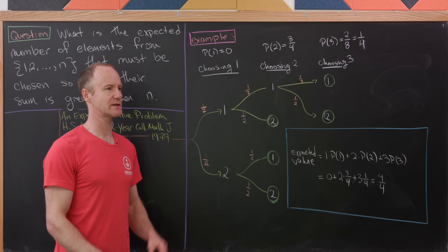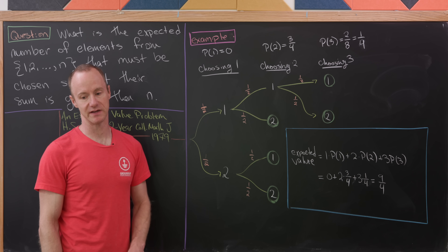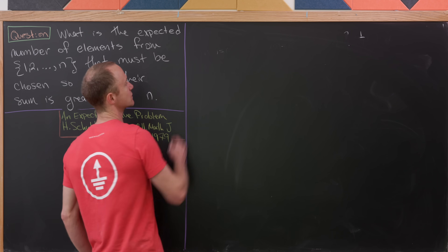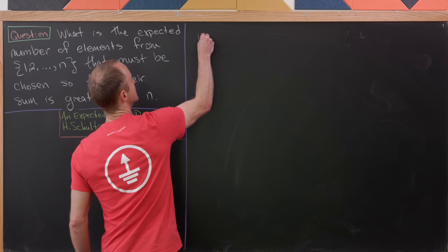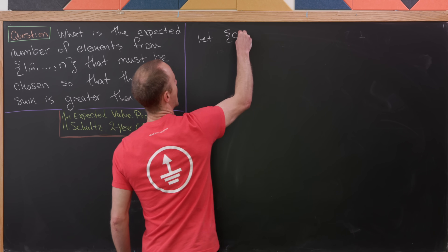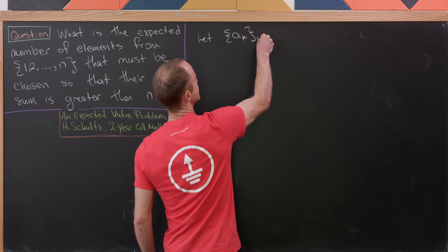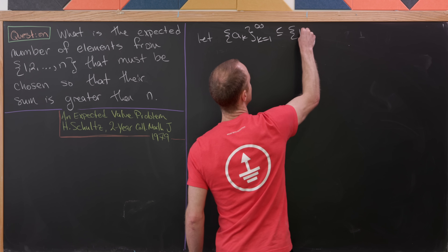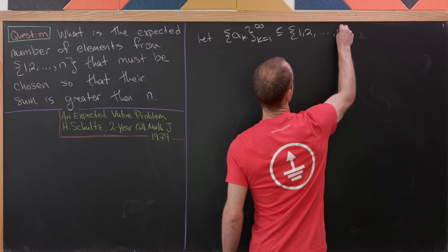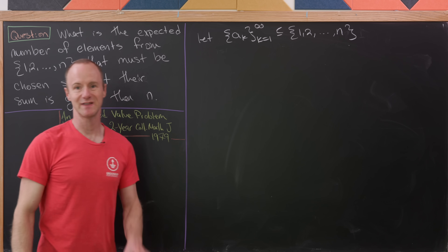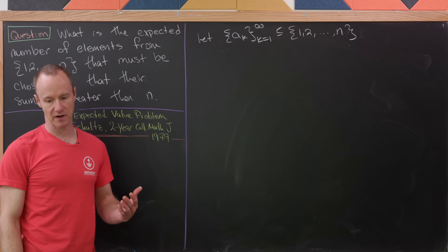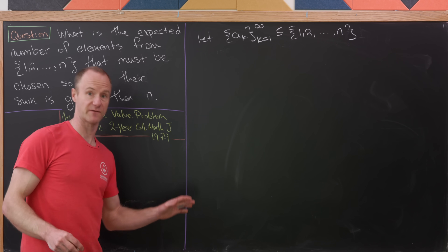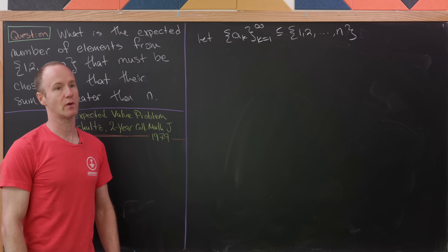Now that we've got some idea of what the problem is, let's see how to solve it in general. The general solution starts like this: let a sub k, as k goes from one to infinity, be a sequence of numbers from our set one to n. So this is an infinite sequence of numbers from this set — it could be one, one, one, two, three, five, one, and so on and so forth.